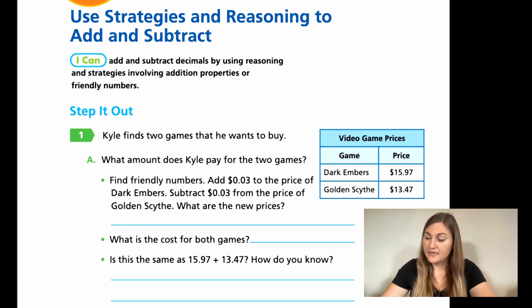The bullet point says find friendly numbers. It says add 3 cents to the price of Dark Embers. So I'm just going to pause there. A friendly number is just a number that makes it really easy to add so that you can do it in your head. The reason it's telling us to add 3 cents to Dark Embers is because if I add 3 cents to $15.97, it would be $16. It would be an even 16, which is way easier to add in my head than $15.97.